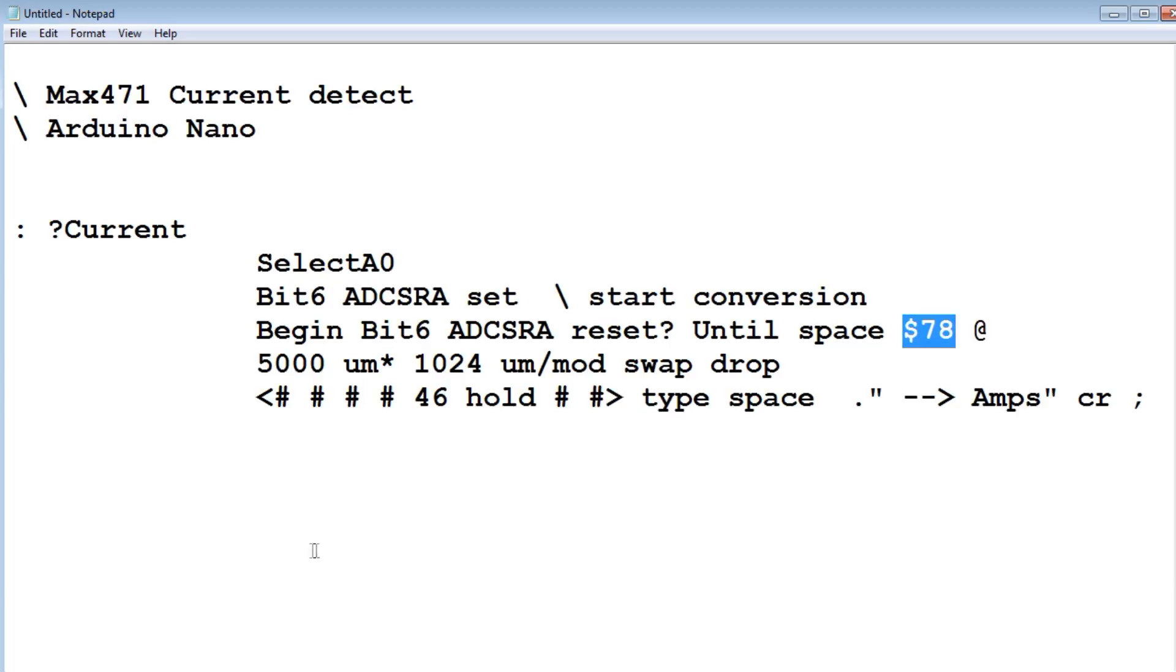Now we do a little bit of math - integer math with fixed point. There's my 5 volt reference and there's my 1024 steps for my ADC converter. This is my fixed point math, and it's very fast. This will give me my display of my output current and it will actually put the decimal place in the proper space. That's ASCII 46, that's your decimal place.